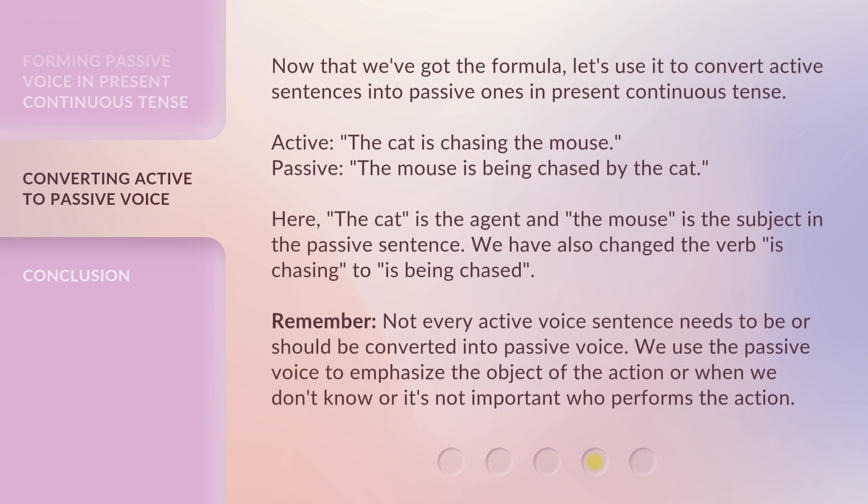Now that we've got the formula, let's use it to convert active sentences into passive ones in present continuous tense. Active: 'The cat is chasing the mouse.' Passive: 'The mouse is being chased by the cat.' Here, 'the cat' is the agent, and 'the mouse' is the subject in the passive sentence. We have also changed the verb 'is chasing' to 'is being chased.'